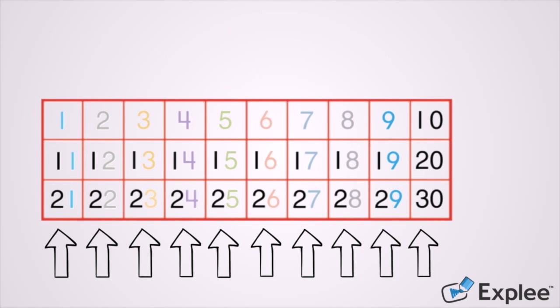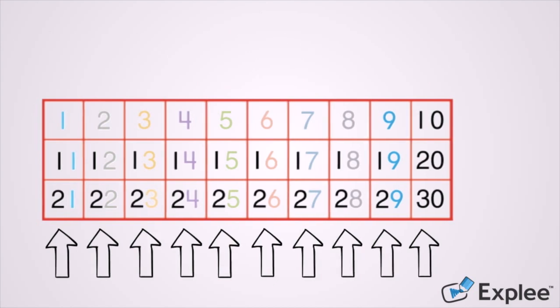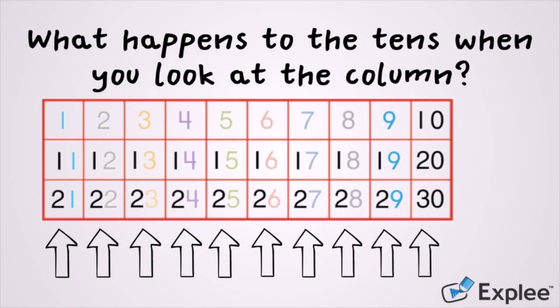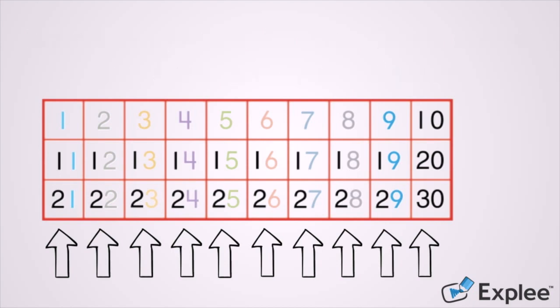What happens to the tens when you look at the column, like in the column 6, 16, 26? Well in the first part, 6, we don't have a number in the tens. In 16 we have 1. In 26 we have 2. When looking at the columns, the tens will increase by 1 each time you move down the column.